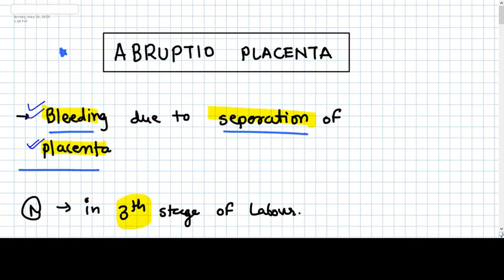So what is abruptio placenta? What is the difference between placenta previa and abruptio placenta? In both things, separation happens. The placental separation from its bed happens. That's why the vascular sinuses and channels are open and bleeding happens, hemorrhage happens. It happens in both varieties, abruptio placenta and placenta previa.